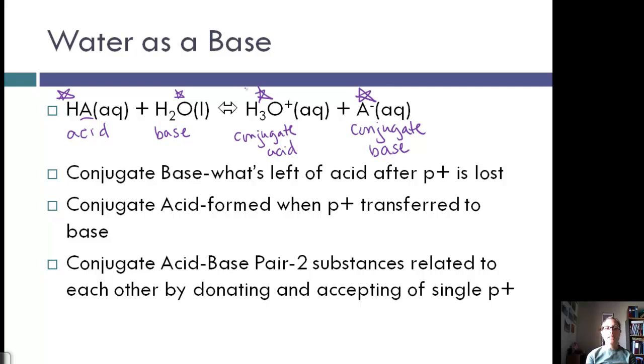We have what are called conjugate acid-base pairs. These are the two substances that are related to each other due to the donating and accepting of the proton. Our two pairs are the HA and the A-, and the H2O and the H3O+, because they are either donating and accepting, or accepting and then becoming the H3O+.